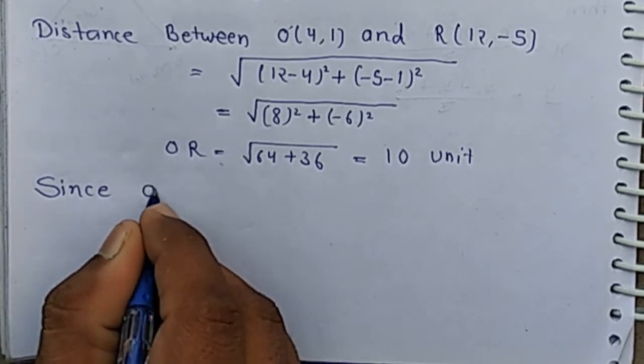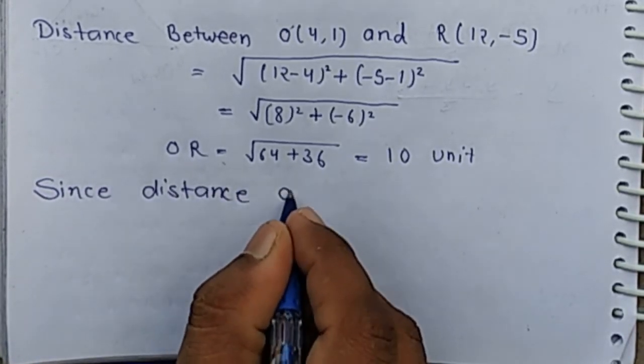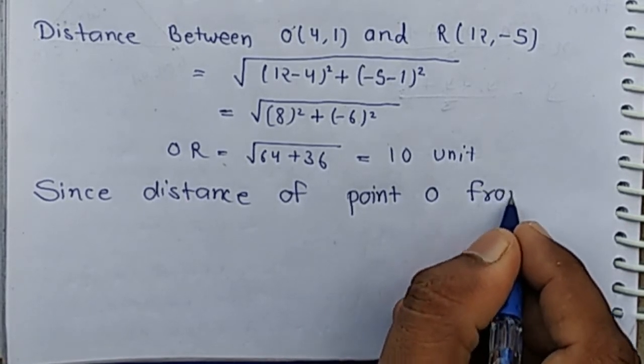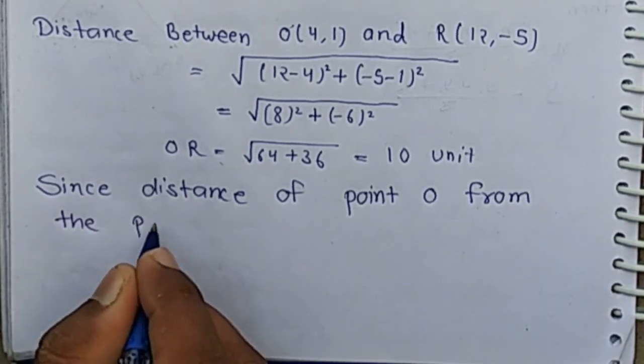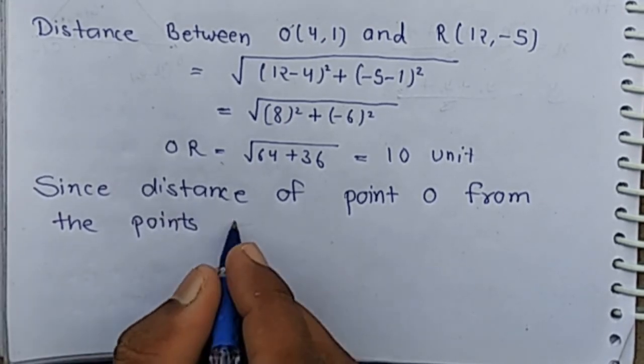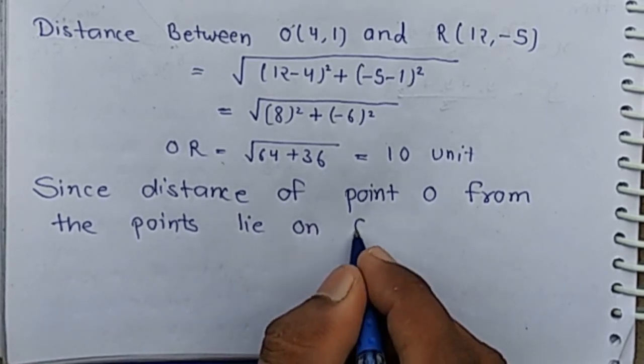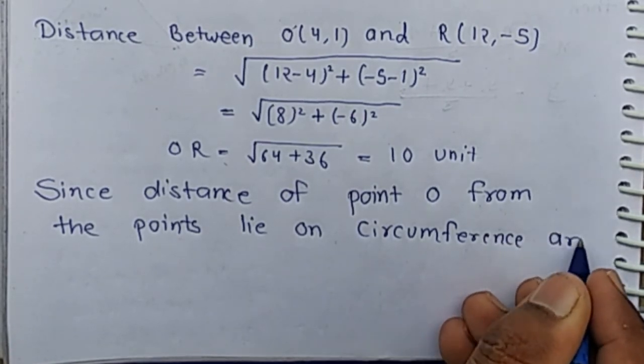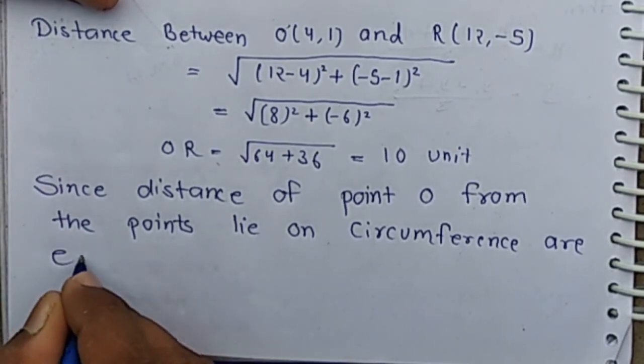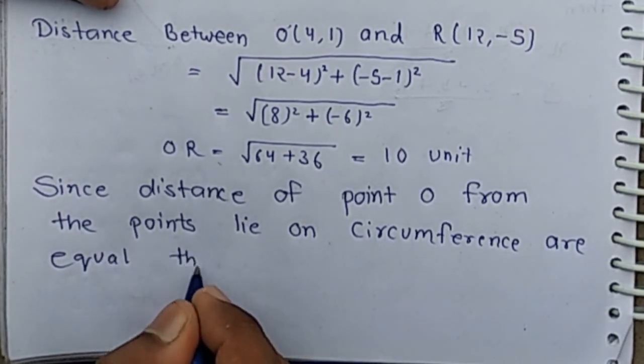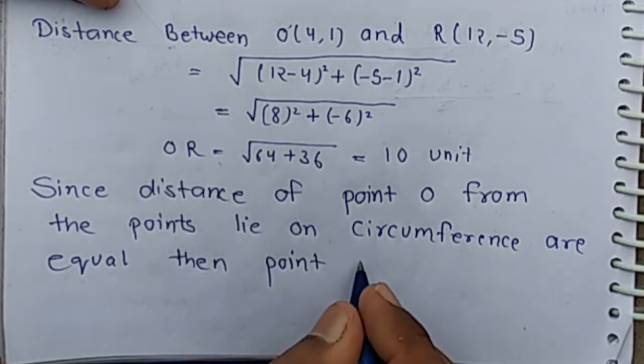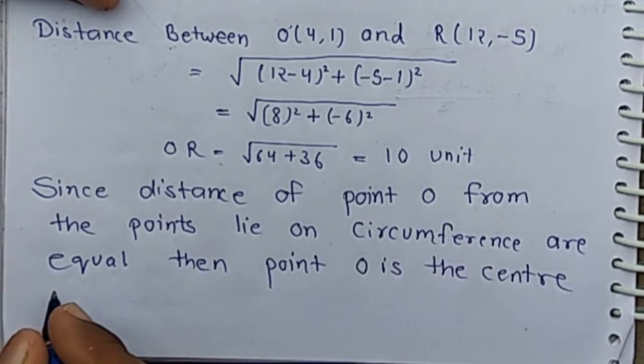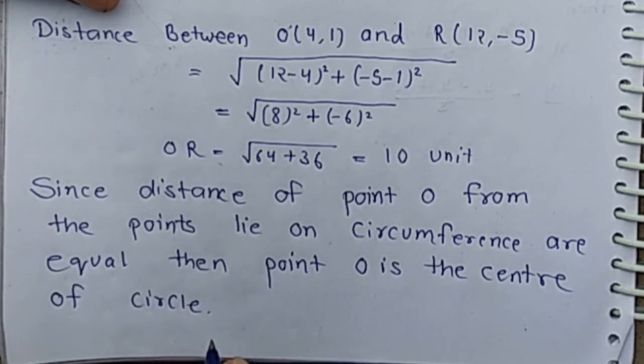Since distance of point O from the points lie on circumference are equal, then point O is the center of circle. (4,1) is the center of circle. Thank you.